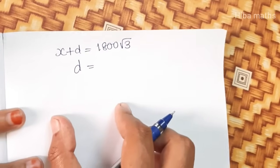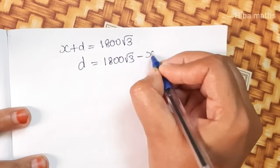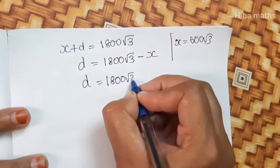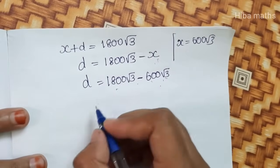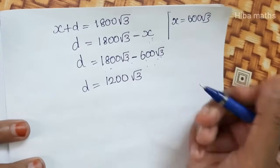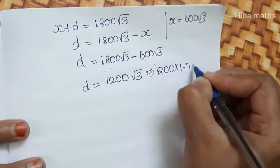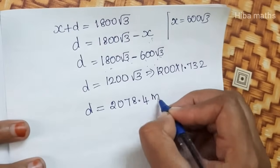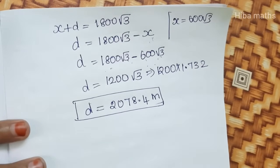To find the distance between two ships, we have d equals 1800 root 3 minus x. Substituting x value of 600 root 3, we get d equals 1800 root 3 minus 600 root 3 equals 1200 root 3. Root 3 value is 1.732, so 1200 times 1.732 equals 2078.4 meters. This is the distance between two boats.